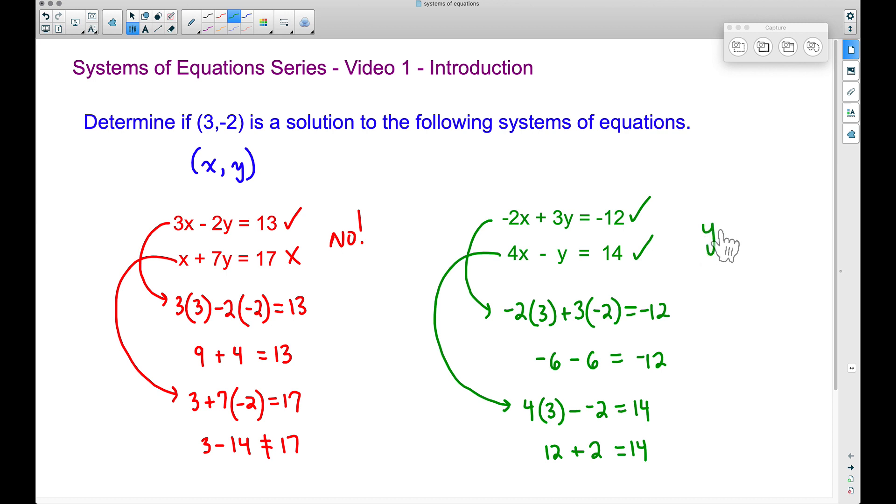So therefore, we can say yes, this ordered pair, (3, -2), is a solution to this system of equations over here in green.